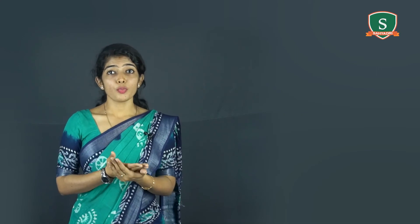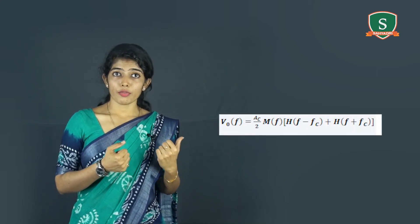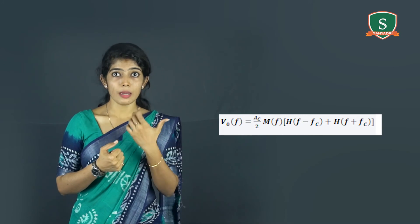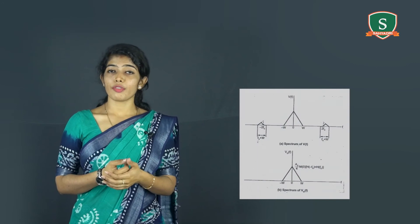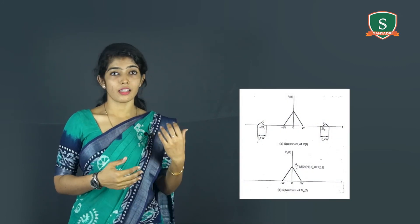The output of the product modulator is later fed to the low pass filter. Thus, the output V0(F) is given as AC/2 M(F) [H(F - FC) + H(F + FC)]. The spectrum for V(F) and V0(F) is as shown.